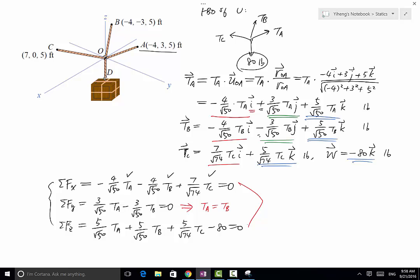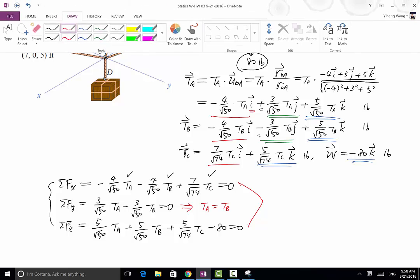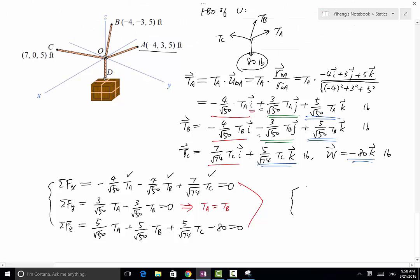As a result, TA equals 36.0 pounds. TB is the same as TA, which is also 36.0 pounds. And lastly, TC equals 50.8 pounds.